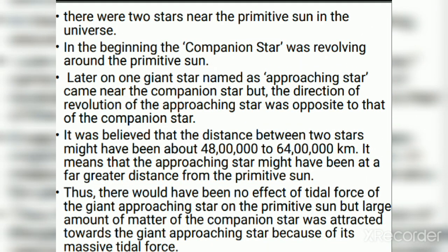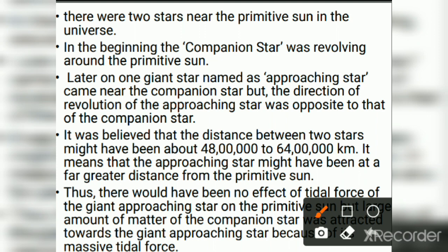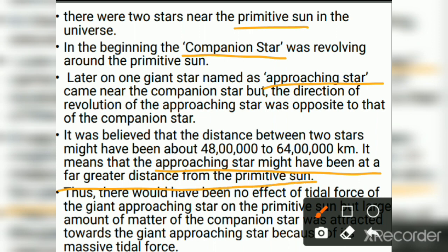In the beginning, a companion star was revolving around the primitive Sun. Later, one giant star named the approaching star came near the companion star, but the direction of revolution of the approaching star opposed that of the companion star. The distance between the two stars might have been 4.8 to 6.4 million kilometers, meaning the approaching star was at a far greater distance from the primitive Sun, so there would have been no effect of tidal force on the primitive Sun.